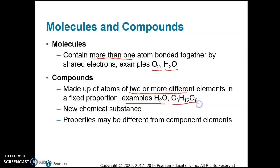A compound means the atoms have to be from two or more different elements, whereas in a molecule they can be two or more of the same element. You need to know the chemical formula for glucose: C6H12O6. That means there are six atoms of carbon, twelve atoms of hydrogen, and six atoms of oxygen that form glucose.